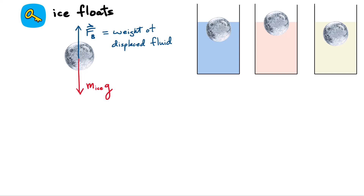Our second key point is that the ice floats in each case. If it floats, the free body diagram shows the weight of the ice downward equals the buoyant force upward. By Archimedes' principle, the buoyant force equals the weight of the displaced fluid. Whatever part of the ice ball is below the surface displaces fluid, so we have: mass of ice times g equals mass of displaced fluid times g. Canceling g from both sides simplifies things.